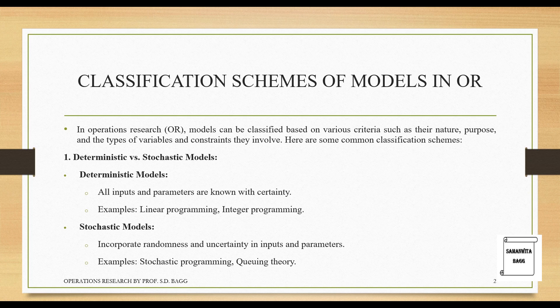Stochastic models incorporate randomness and uncertainty in inputs and parameters. Examples include stochastic programming and queuing theory. For instance, consider a dentist who has many patients visiting all day. When planning appointments, he must maintain a time interval between patients so they do not wait too long, while also estimating approximate treatment time. There is randomness because patients enter and leave at random times, and uncertainty because a patient who books a slot may not turn up.